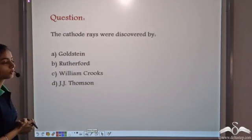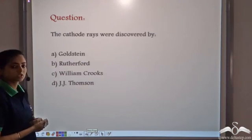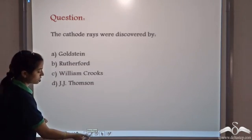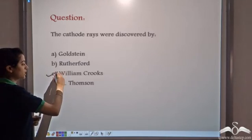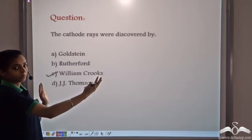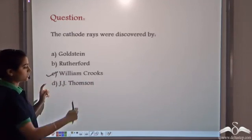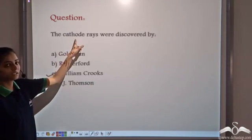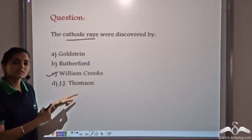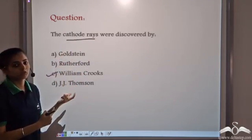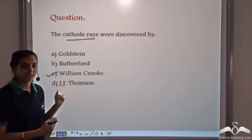The cathode rays were discovered by William Crookes, who connected the apparatus to the negative and positive terminals of a battery. Later, J.J. Thompson proved that the cathode rays consist of electrons. But it was William Crookes who originally discovered the cathode rays.